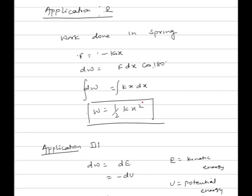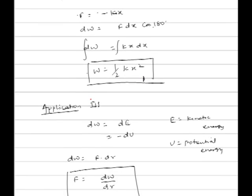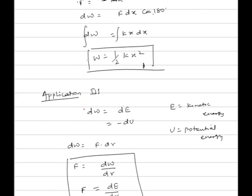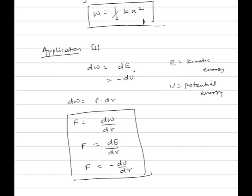Third application: work done equals change in energy, meaning change in kinetic energy. If work done is positive, kinetic energy increases. If work done is negative, kinetic energy decreases. The total energy of the system remains constant, so if kinetic energy increases, potential energy must decrease. Therefore, work done is also given as dW equals dE minus dU.